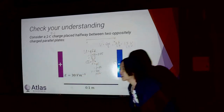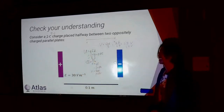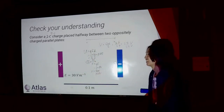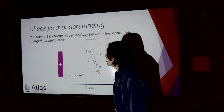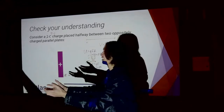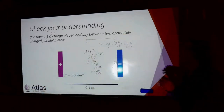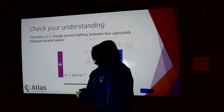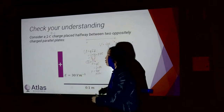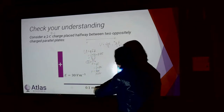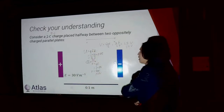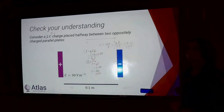Every meter, the charge experiences 30 volts. Moving one meter through this 30 V/m electric field gives you 30 volts. Moving 0.1 meters gives you 3 volts. Moving 0.05 meters gives you 1.5 volts. That's what volts per meter means.